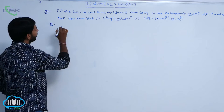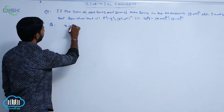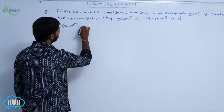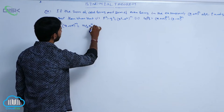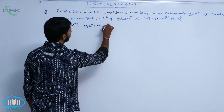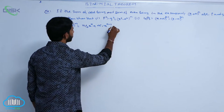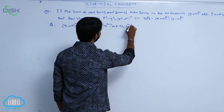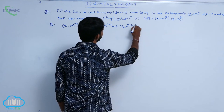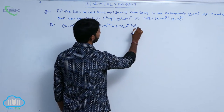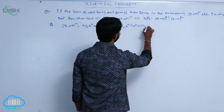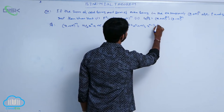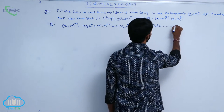First, write the expansion of (x + a)^n: (x + a)^n = nC0 * x^n + nC1 * x^(n-1) * a + nC2 * x^(n-2) * a² + nC3 * x^(n-3) * a³ + and so on.